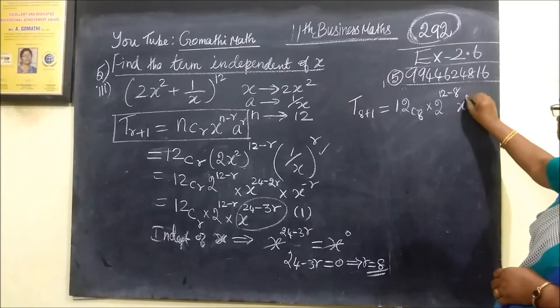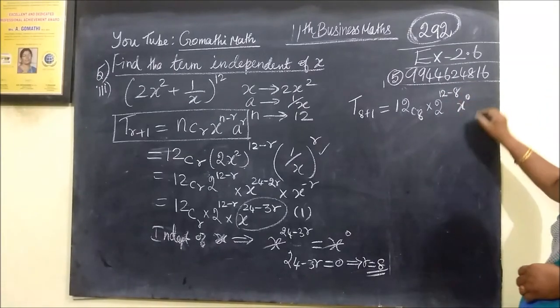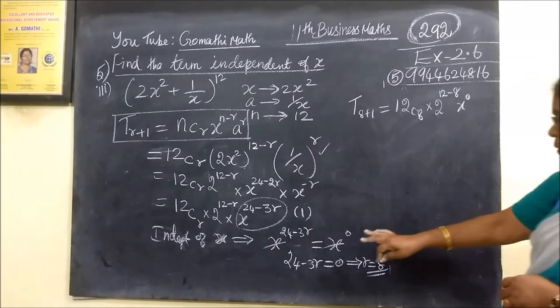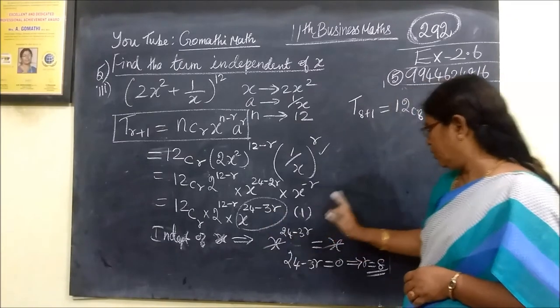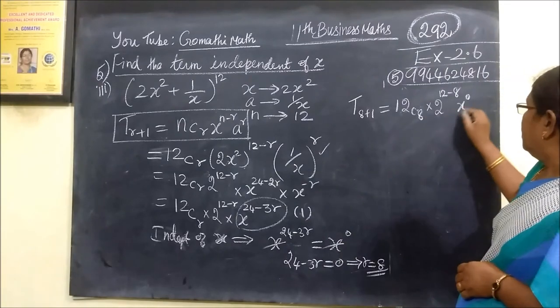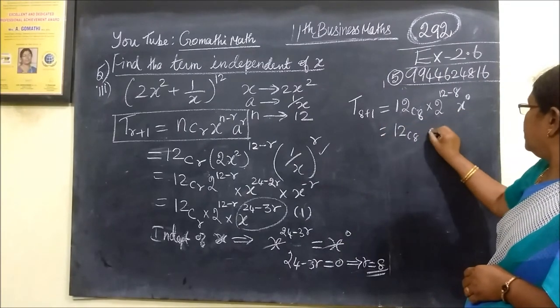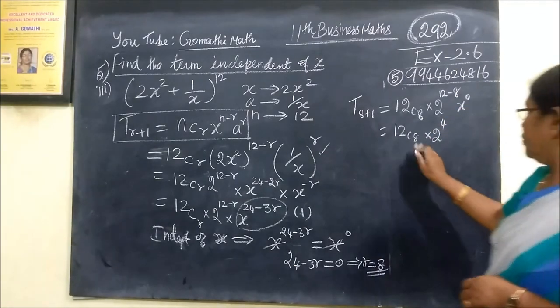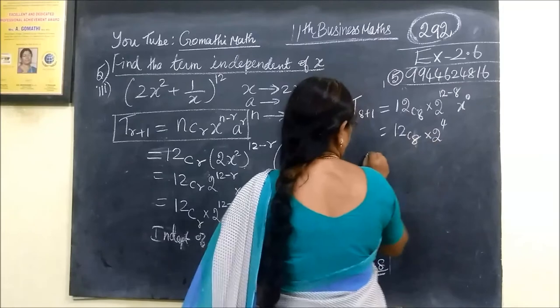These will be simplified. Then 2 power 12 minus 8. So 12C_8 into 2 power 4.